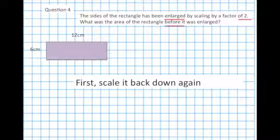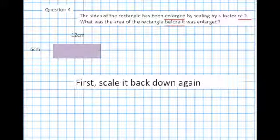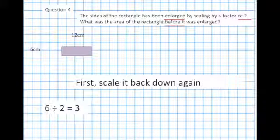So first, scale it back down again. It was enlarged by a factor of 2. So we'll make it smaller by a factor of 2. Which means, divide the 6 by 2 to get 3. And divide the 12 by 2 to get 6.